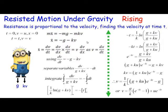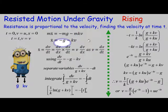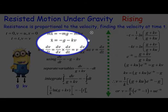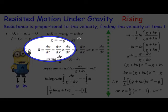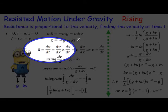You can see here x double dot equals minus g minus kv. Now we need to write an expression for the acceleration in terms of one of the variables we have, which in this case is velocity. So we're going to use x double dot equals dv/dt.